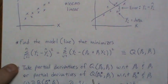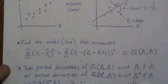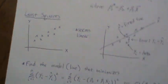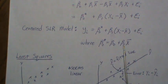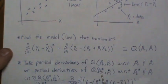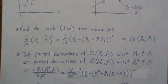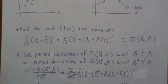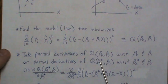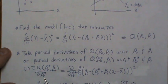Equivalently, we take partial derivatives of the centered model with respect to beta-0-star and beta-1, because the derivations are slightly easier. We can then back-solve for beta-0 from beta-0-star. Let's take the partial derivative of the centered model's Q with respect to beta-0-star.